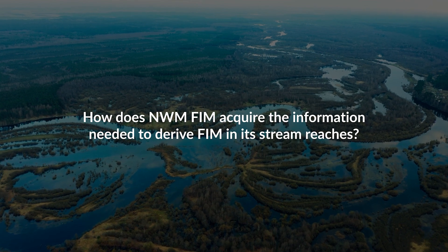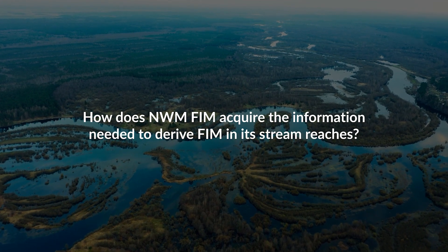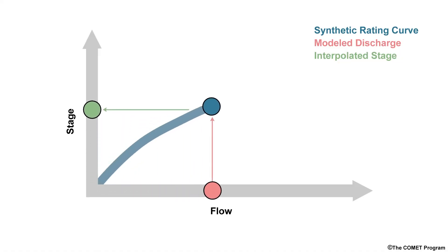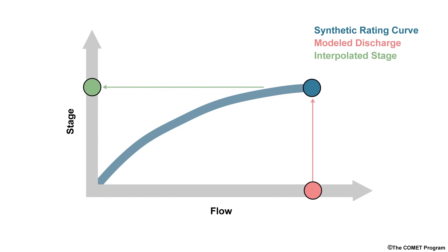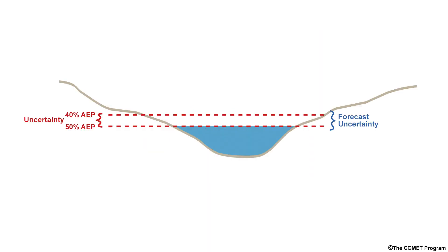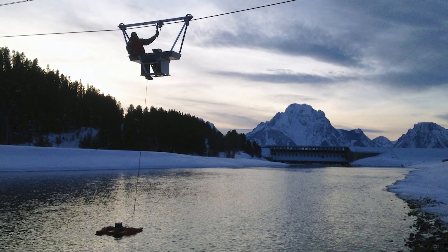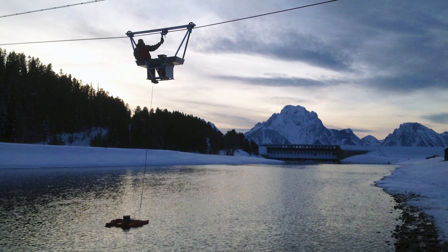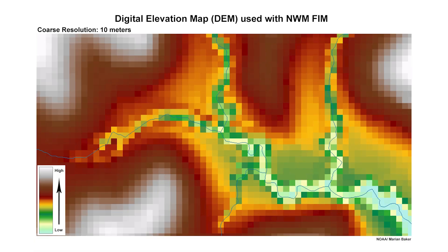How does NWM FEM acquire the information needed to derive FEM in its stream reaches? NWM FEM is computed using synthetic rating curves which convert the forecast flow to stage height for stream reaches. NWM FEM is limited by the representativeness of the NWM flow forecasts and only computed when the flow exceeds the estimated high water thresholds. The derived synthetic rating curves are typically not as representative as those rating curves derived from direct field measurements. As of 2022, the spatial resolution of the grid used for the NWM FEM is 10 meters.